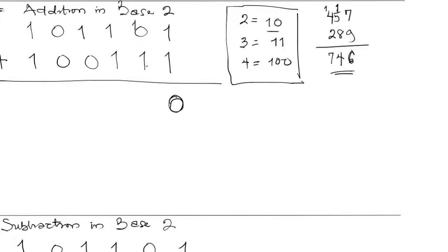1 plus 1 again is 2. We can't write down 2 — same thing, that's 10, so write down 0 and carry 1. Now 1 plus 1 is 2, and 2 plus 1 is 3. This time around we can't write 3, so we go to our reference. We know that 3 is 11, so we write 1 as the unit part and then carry the second 1 over.